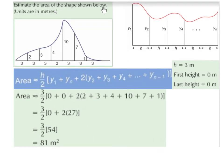Estimate the area of the shape shown below. Units are in metres. The only difference with this question compared to the last one is that we don't have a first height and we don't have a last height. So we have to be careful — we're going to let our first height be 0 and our last height be 0. We do not let 2 be the first height and 1 be the last height; that is incorrect.